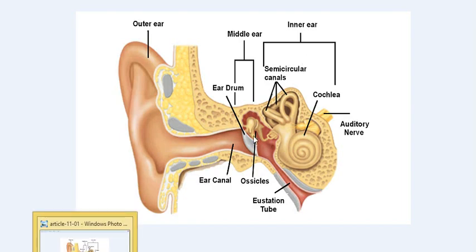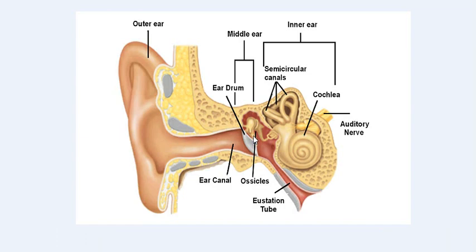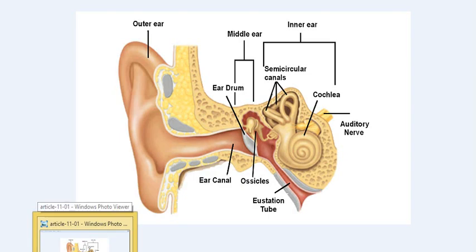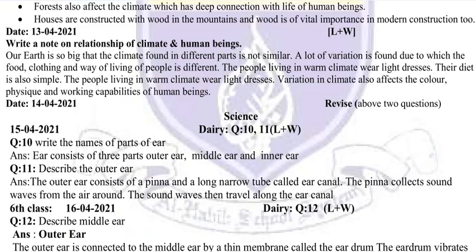We call this the inner ear. The question was about the parts of our ear including parts of our head. So scientifically, the ear is divided into three parts: the first one is the outer ear, the second one is the middle ear, and the third one is the inner ear.